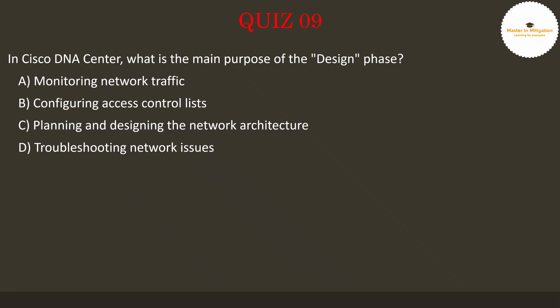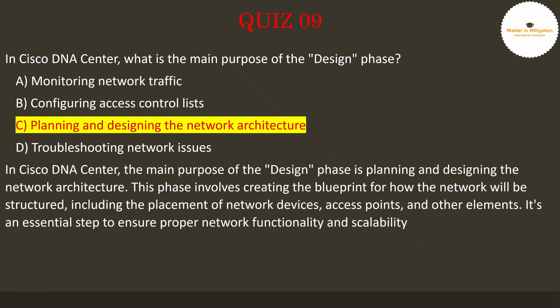The answer is C. Planning and designing the network architecture. In Cisco DNA Center, the main purpose of the design phase is planning and designing the network architecture. This phase involves creating the blueprint for how the network will be structured, including the placement of network devices, access points, and other elements. It's an essential step to ensure proper network functionality and scalability.